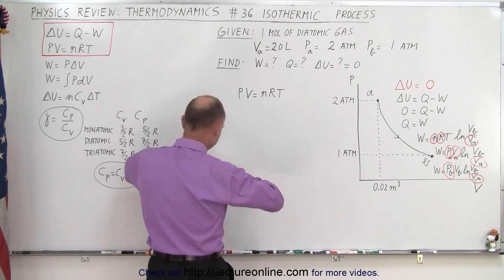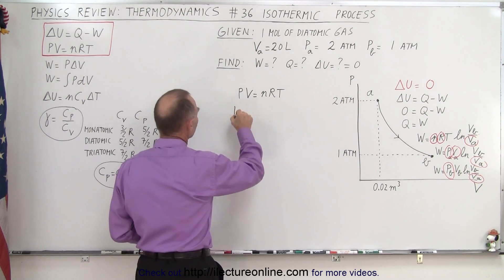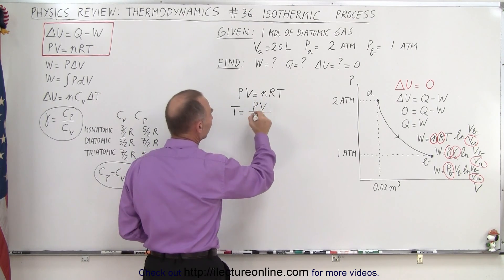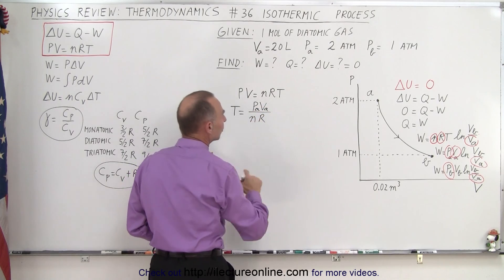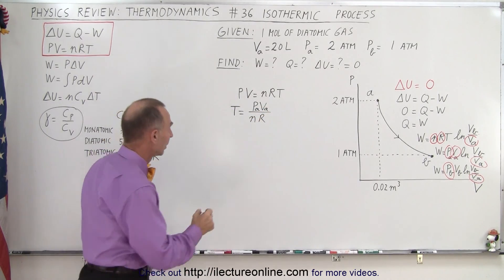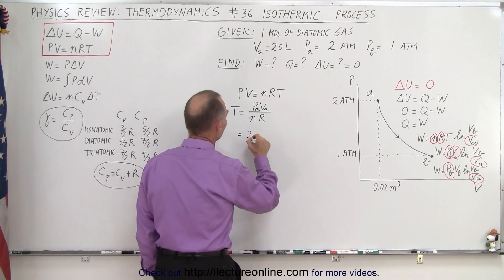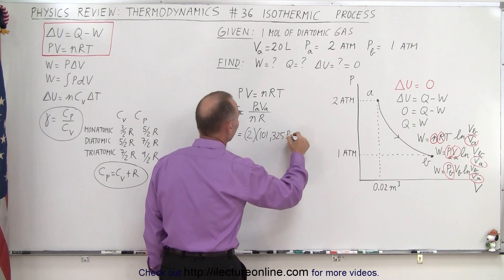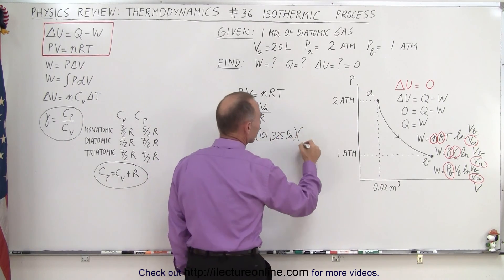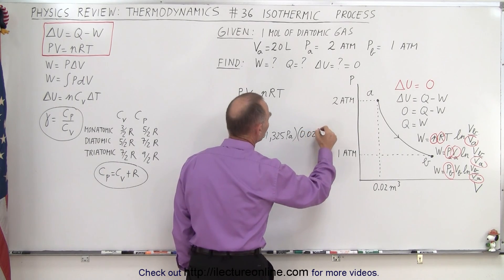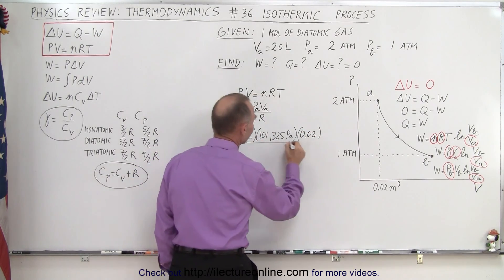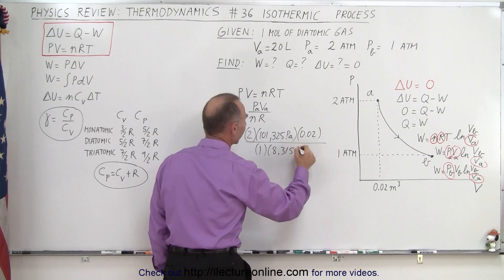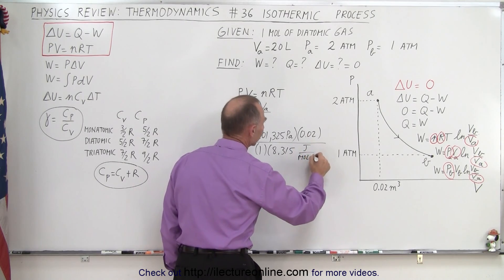So solving this for temperature, we get the following. Temperature is equal to the pressure times the volume divided by N times R. Now, let's take it at point A because we know both the pressure and the volume at A. So this is equal to 2 atmospheres times 101,325 pascals per atmosphere. And the volume at A is 0.02 cubic meters divided by the number of moles, which is 1, and R is the gas constant 8.315, that's joules per mole times Kelvin. And at this point we need a calculator to see what we have.